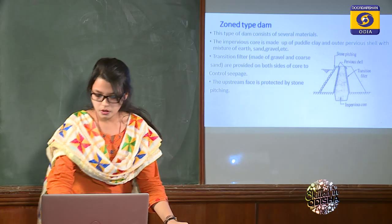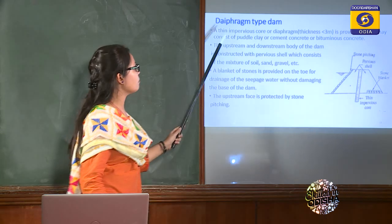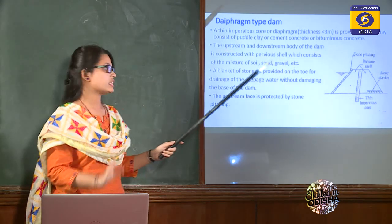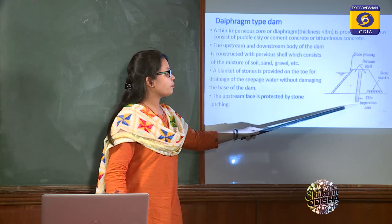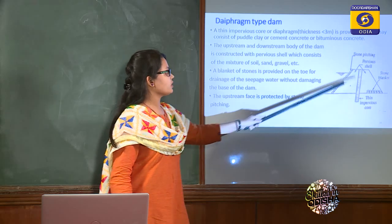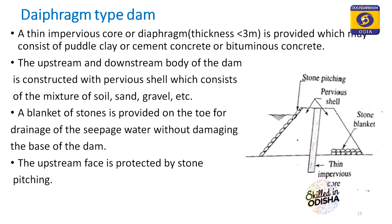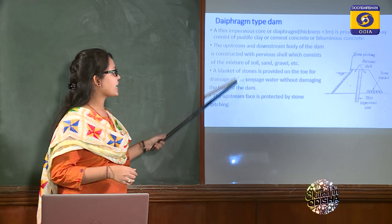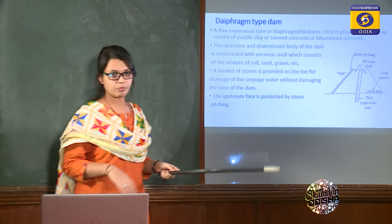The diaphragm type is similar to the zoned type, with the only difference being the thickness of the impermeable core. The impermeable core is made of puddle clay, cement concrete, or bituminous concrete, and its thickness is generally less than 3 meters. If the thickness is increased beyond 10 meters, it becomes a zoned type dam.